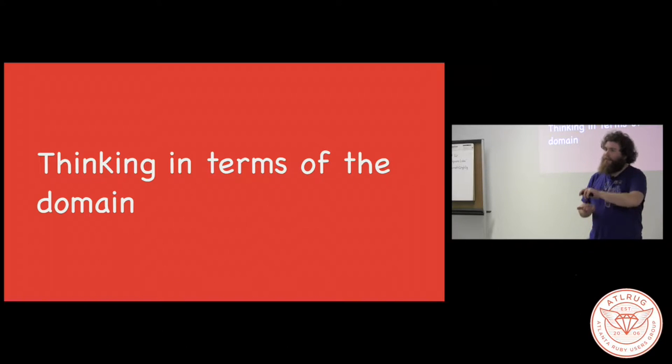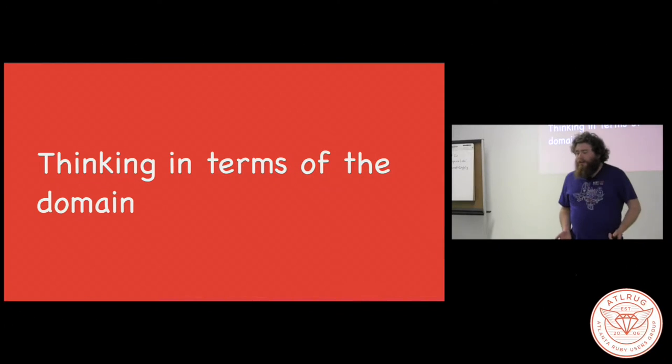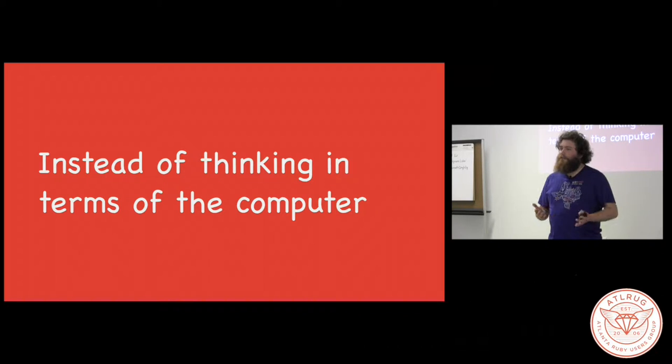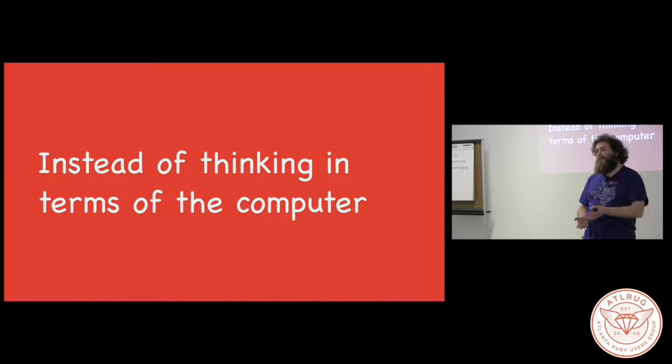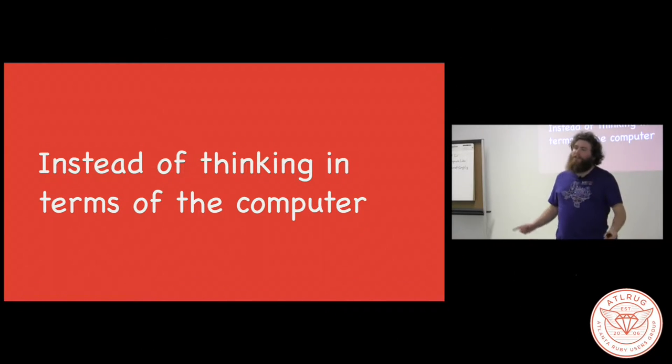When I'm working with newer developers, I like to call this thinking in terms of the domain. Most of us, when we build applications, aren't building applications to service computers, but rather people. We have shopping carts and line items and delivery addresses. We don't have bytes and processes and file systems. While most of us spend our days thinking in terms of the domain in Ruby, the opposite would be considered thinking in terms of the computer. And it's worth noting that these two ideas aren't totally distinct. If my job is to develop drivers for a graphics card inside a laptop, then my domain actually overlaps with how the computer works.